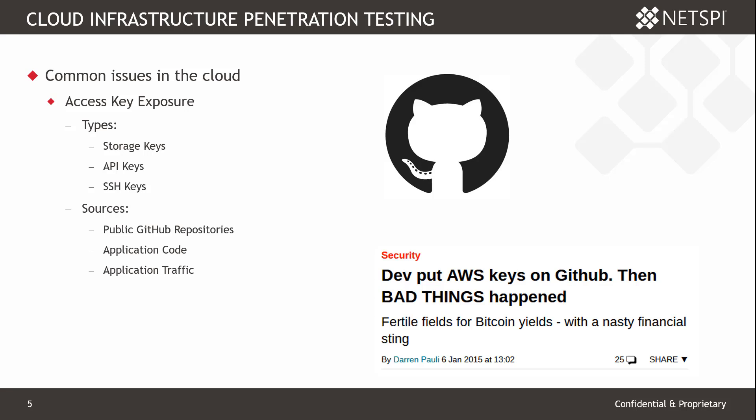The next common issue is access key exposure out through the internet. When we access a cloud service, we typically use some type of key — be it for storage services or SSH keys to get into virtual machines stored out in the cloud. These keys can be accidentally put into GitHub, or somebody pastes them into Pastebin or wherever, and they end up on the internet where attackers may find them and use them to gain access to that cloud environment.